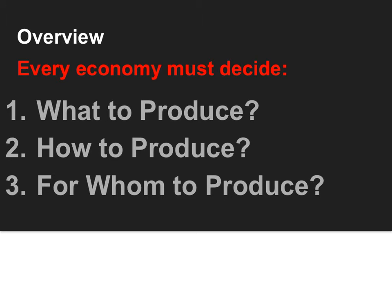Going along with the big trade-off, what we say is that government in general has kind of two ends of the spectrum to go towards. Government actions can make the markets more efficient by, for the most part, stepping away. Or it can step in and be more integral in deciding the level of equity or fairness or equality in the economic system.